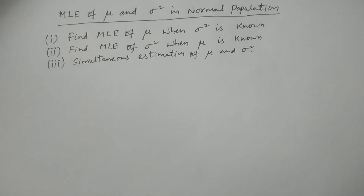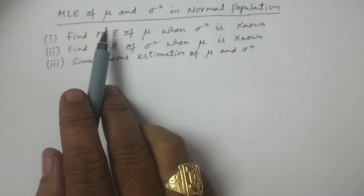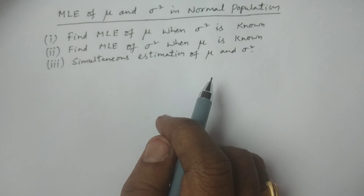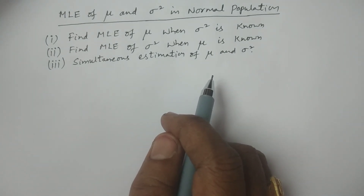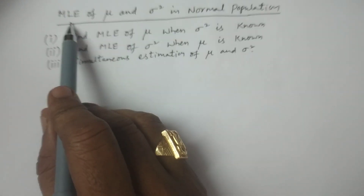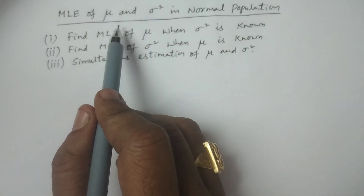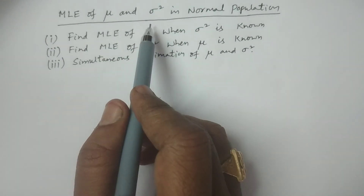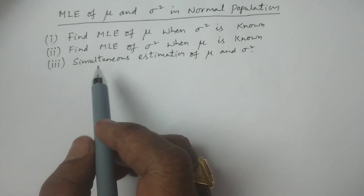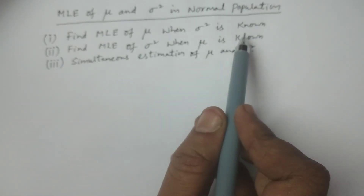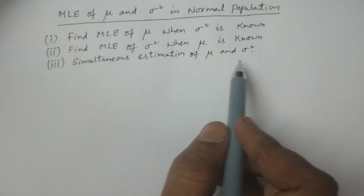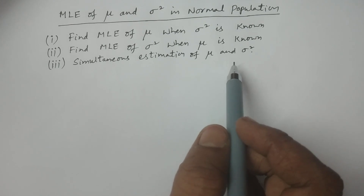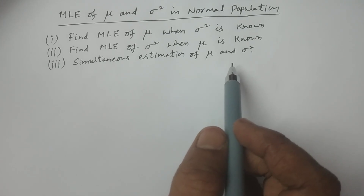This is statistics. We will find the MLE of mu and sigma square in a normal population. The topics covered are: obtaining MLE of mu when sigma square is known, MLE of sigma square when mu is known, and simultaneous estimation of mu and sigma square in the normal population.